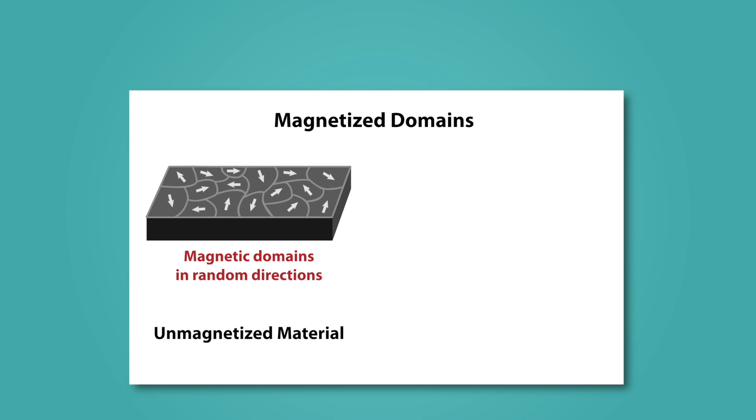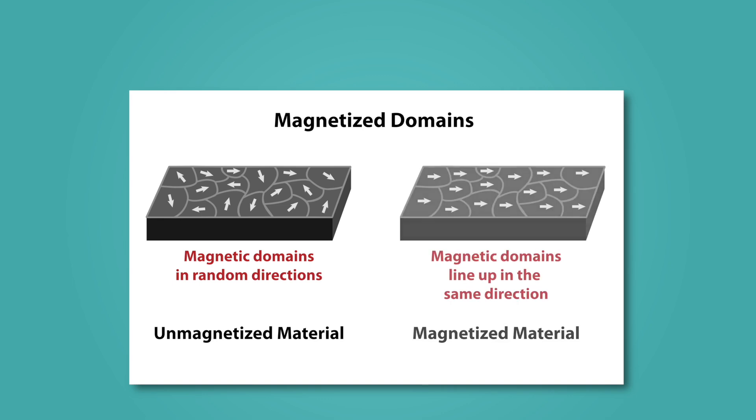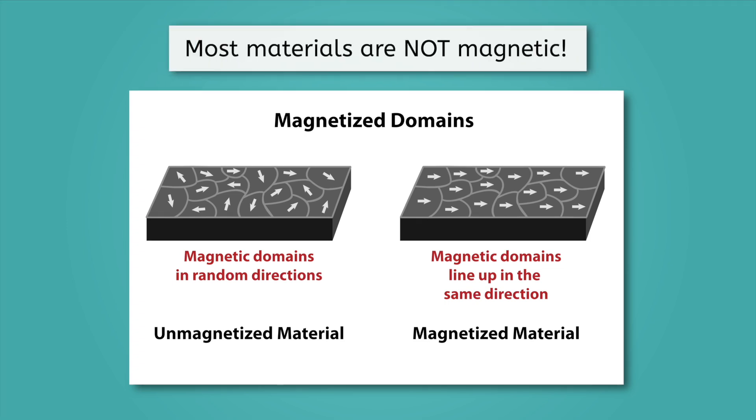But in the presence of a magnetic field, the domains of some materials may line up such that every single one faces the same way. And now we finally have a magnet. But this is why most materials are not magnetic. It takes a lot of details being just right in order for everything to line up in such a way that a net magnetic force emerges.